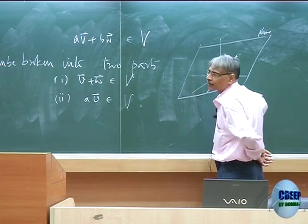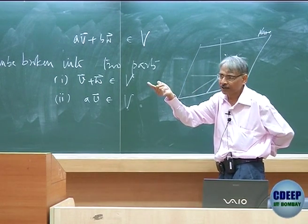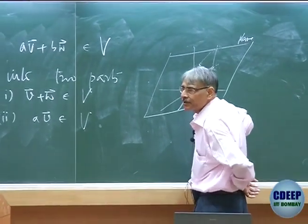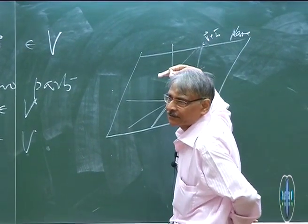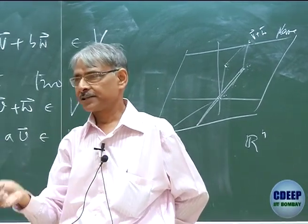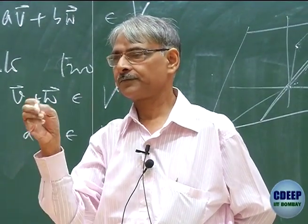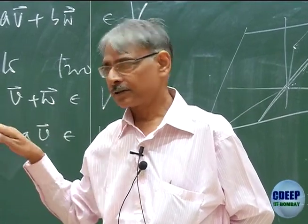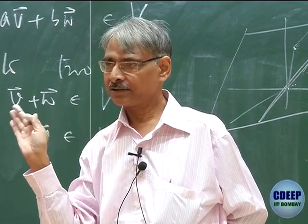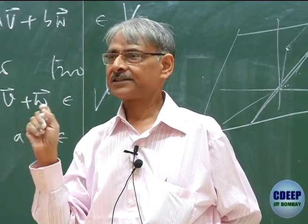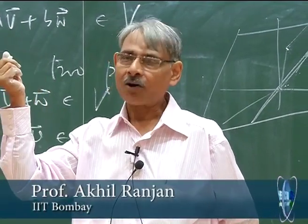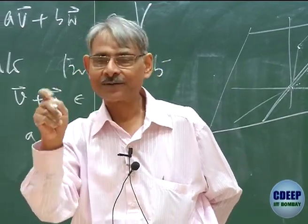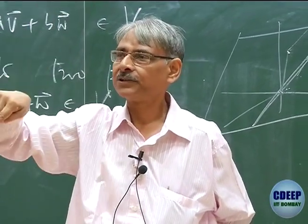Suppose we are in R³ and there is a plane through the origin. If you take any vector on this plane, all its scalar multiples — the whole line through origin and through this vector — will lie on the same plane, since the plane already passes through the origin. Secondly, if there are two vectors on the plane, by the parallelogram law their sum will also stay in the same plane. So a plane through the origin is an example of a vector space; similarly, a line through the origin is an example of a vector space.